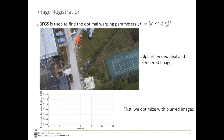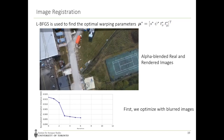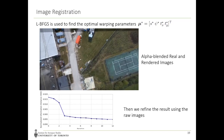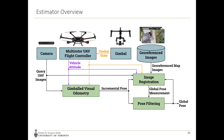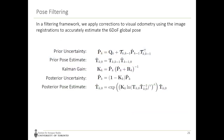From the optimal warping parameters, we recover the vehicle pose parameters and treat this as a global pose measurement in a filtering framework. The filtering equations essentially use the image registrations to apply corrections to visual odometry.